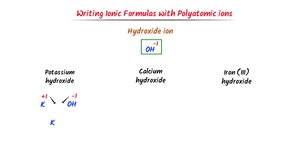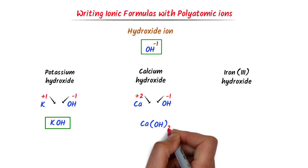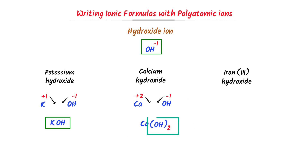In case of calcium hydroxide, calcium is in group 2 with oxidation state positive 2, while the charge on hydroxide ion is negative 1. I cross their respective charges. Remember that when I write 2 as a subscript, I write that 2 with both oxygen and hydrogen — that is why I put brackets here. So I get Ca(OH)₂, calcium hydroxide.